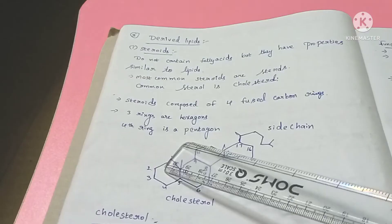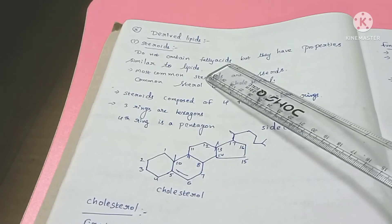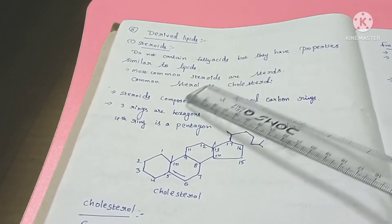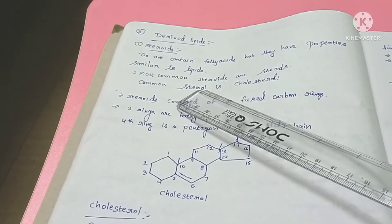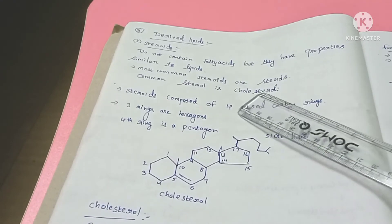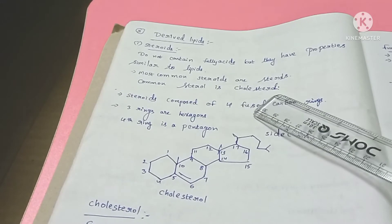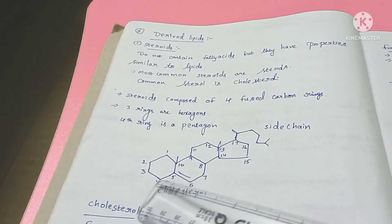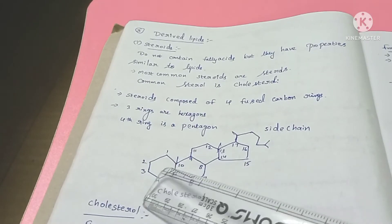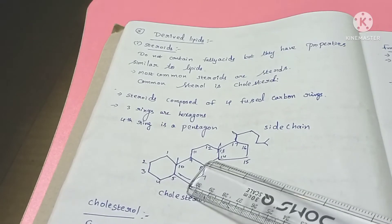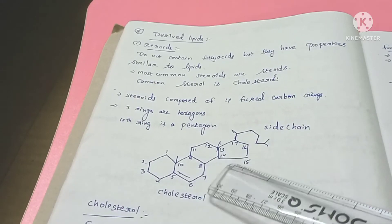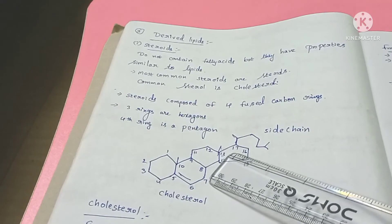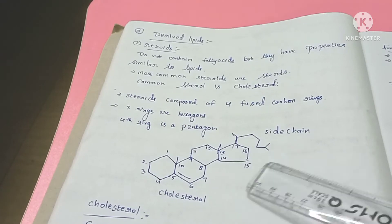Next are steroids. Steroids do not contain fatty acids but have lipid properties. The most commonly studied steroids are sterols, and the most common sterol is cholesterol. Steroids have a structure of four fused carbon rings labeled A, B, C, D. The first three rings are hexagon structures and the fourth ring is a pentagon structure. At the 17th carbon position, there is a side chain attached — this is the cholesterol structure.